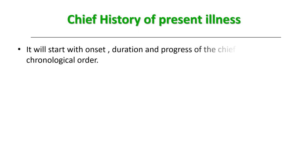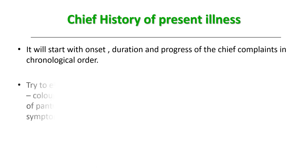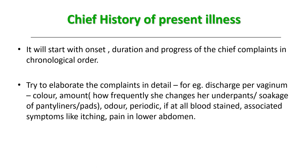The history of present illness will start with the onset, duration, and progress of the chief complaints in chronological order, as we take in all history-takings — whether she is a patient of surgical illness, medicine, or attending the obstetric OPD. You have to take the history of presenting illness and try to elaborate the complaints in detail. For example, if she comes with discharge per vagina, ask in detail about its color — is it mixed, is it green?